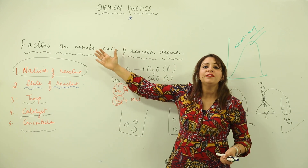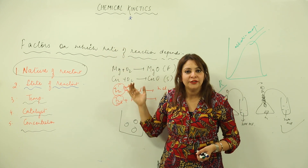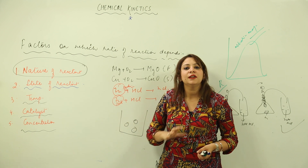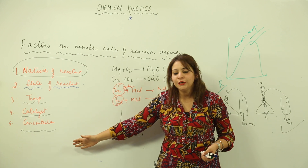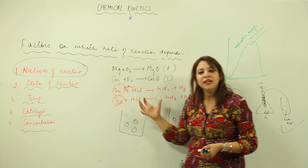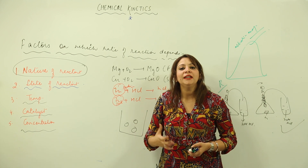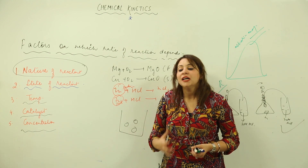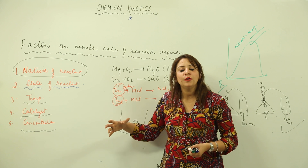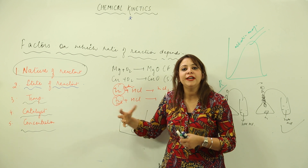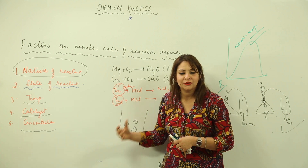So these are the five factors that affect the rate of reaction: nature of reactants, state of reactants, temperature, catalyst, and concentration. In the next topic, we will look at the rate law and how it depends upon concentration.